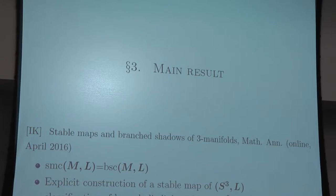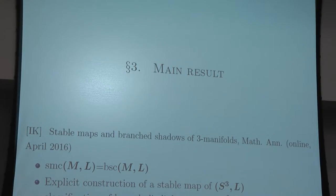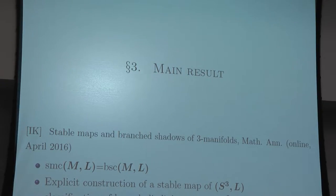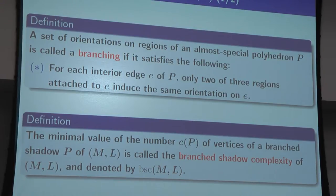Now I state the main results. The first observation is that stable map complexity equals shadow complexity exactly. The second observation is that by using the shadow, we can explicitly construct a stable map from a given link in S³, and we could also make a classification of hyperbolic links with complexity one.